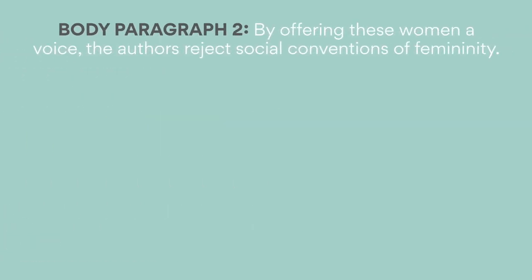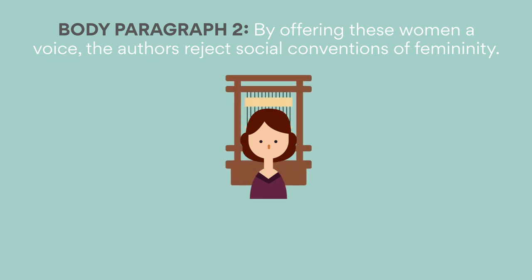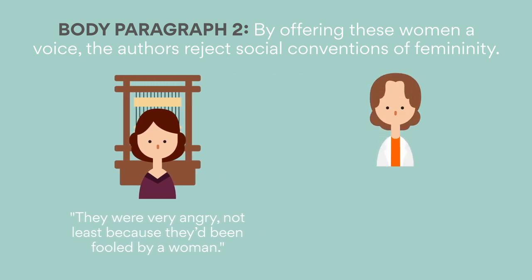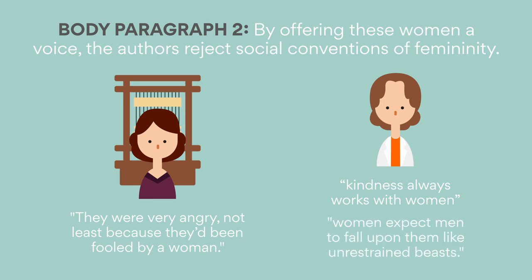Body paragraph two: by offering these women a voice, the authors reject social conventions of femininity. Penelope is cunning and intelligent, foiling the suitors' plans to marry her by delaying her decision with the endless weaving of her shroud. The juxtaposition of unsuspecting men and strategic Penelope thwarts traditional gender roles, where women are viewed as inferior — 'They were angry, not least because they'd been fooled by a woman.' Meanwhile, Rosalind's stubborn and resilient nature rebuffs the narrow-minded beliefs of her co-workers, who believe that kindness always works with women, and that women expect men to fall upon them like unrestrained beasts.